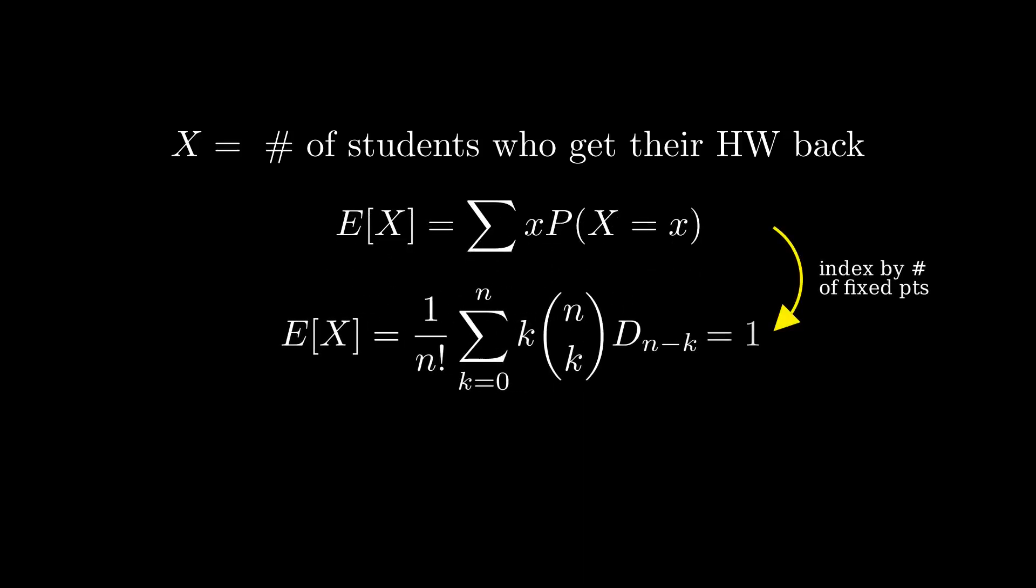We even discovered that regardless of the number of students, the expected value of X is 1. We left off asking about the variance of that fixed point distribution for a given n.